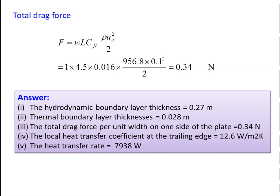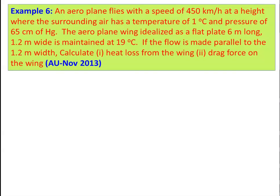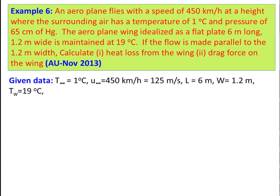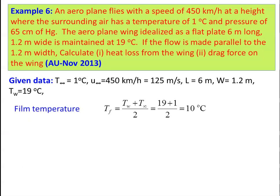Example 6: An aeroplane flies at 450 km/h (= 125 m/s) at a height where T∞ = 1°C and pressure = 65 cm Hg. The wing is idealized as a flat plate 6 m long and 1.2 m wide, maintained at 19°C. Flow is parallel to the 1.2 m width. Film temperature = (19 + 1) / 2 = 10°C.